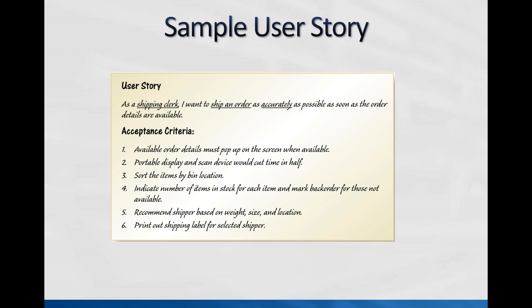We have to figure out the appropriate shipper based on weight, size, and location — and cost, which isn't listed here but is important. Most companies build in some profit margin on shipping because they have to handle that merchandise. So when somebody says free shipping, it still costs them money. Then we print out a shipping label for the correct shipper.